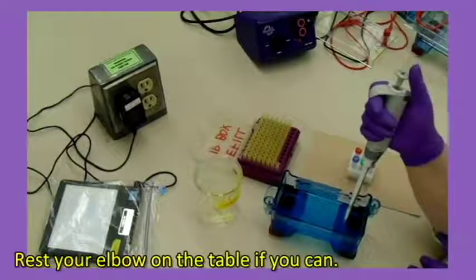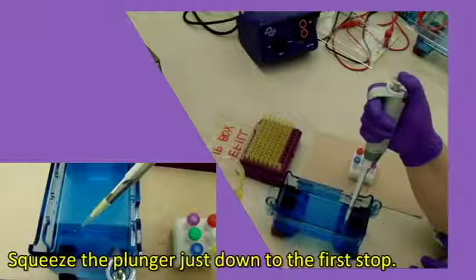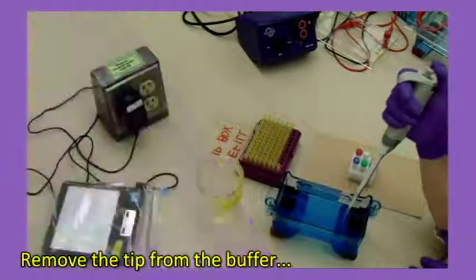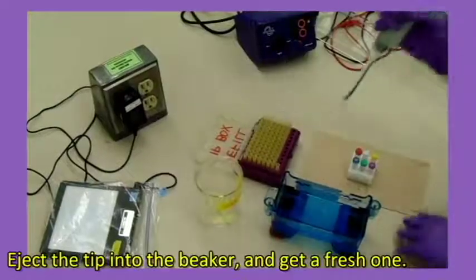Rest your elbow on the table if you can. Lower the tip into the well. Squeeze the plunger just down to the first stop. Remove the tip from the buffer and then release the plunger. Eject the tip into the beaker and get a fresh one.